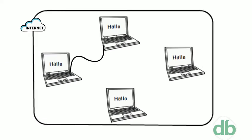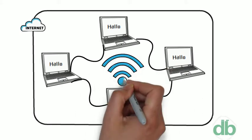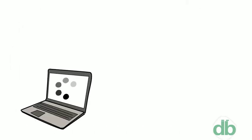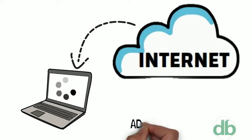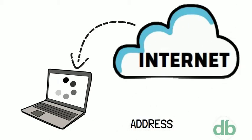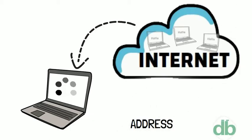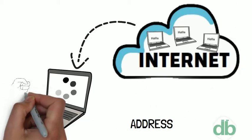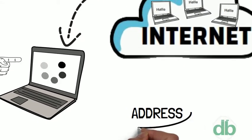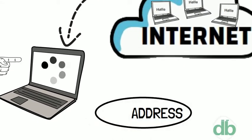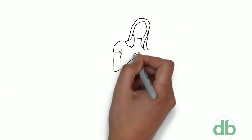Computers on internet communicate with each other with cables or wirelessly. If you want to download a file from internet, then your computer must have an address so that other computers on internet can find and locate your computer. In other terms, that address of a computer is called an IP address.